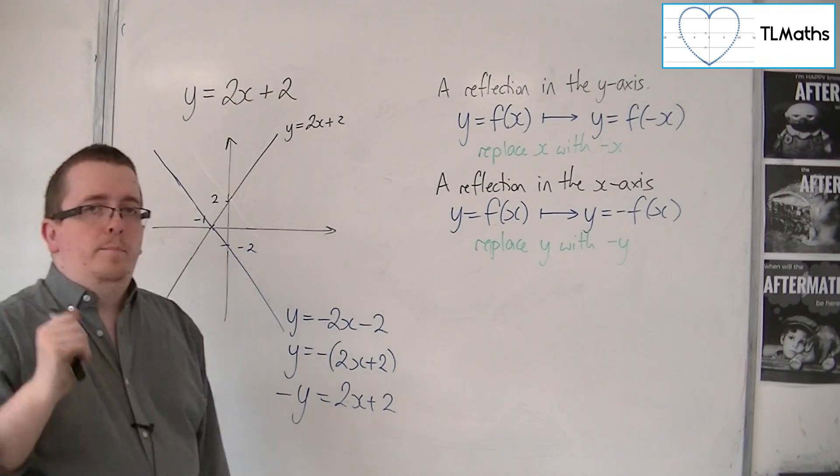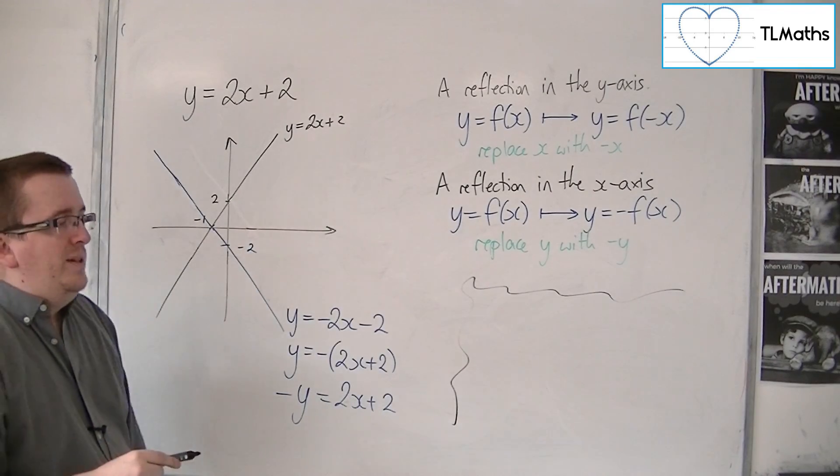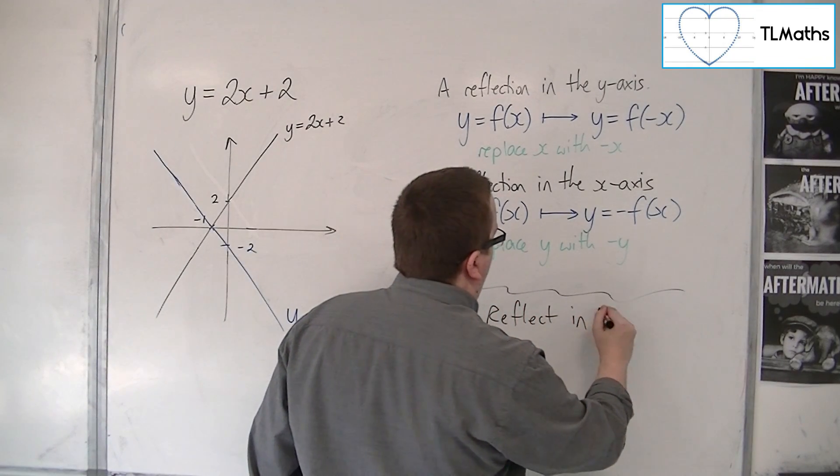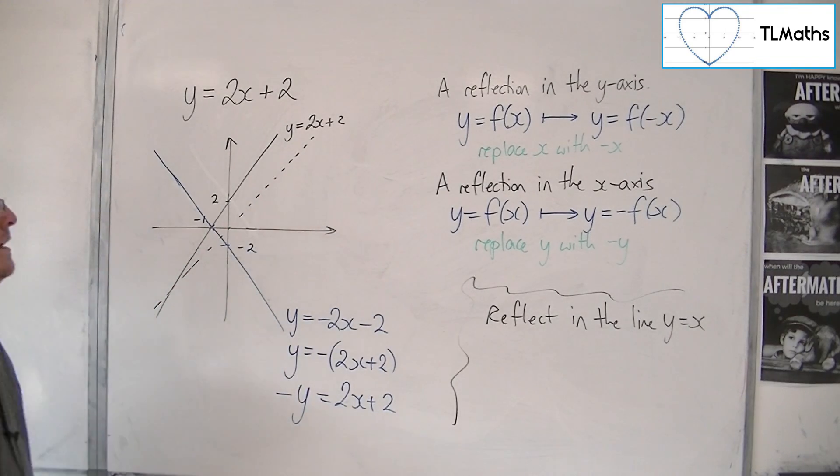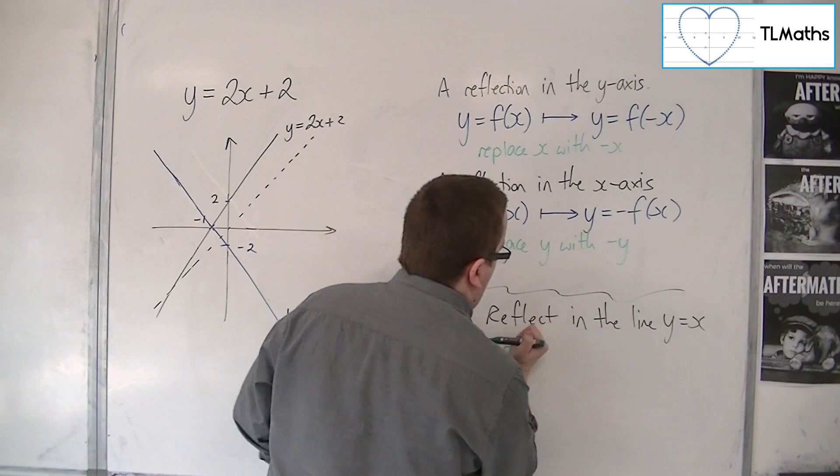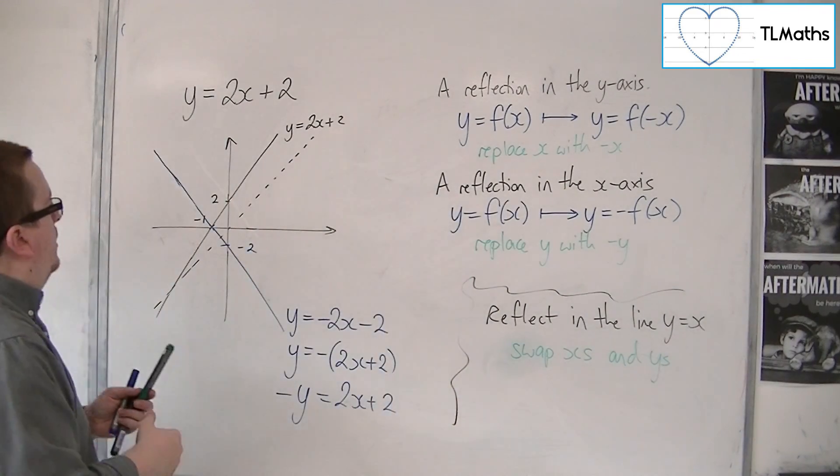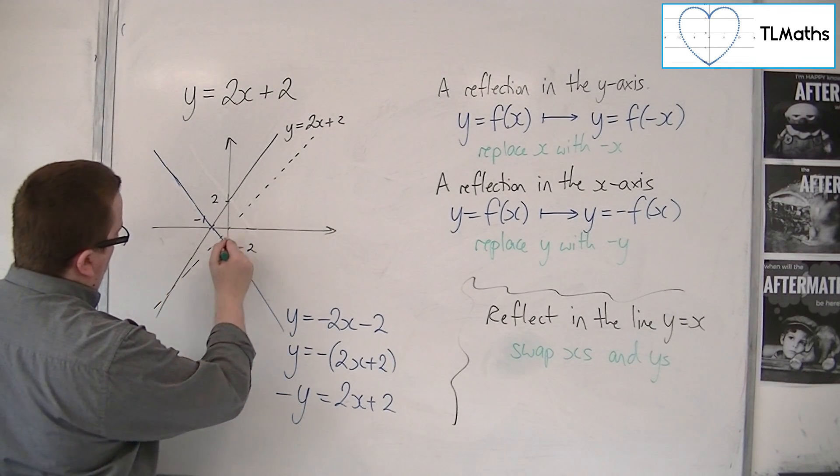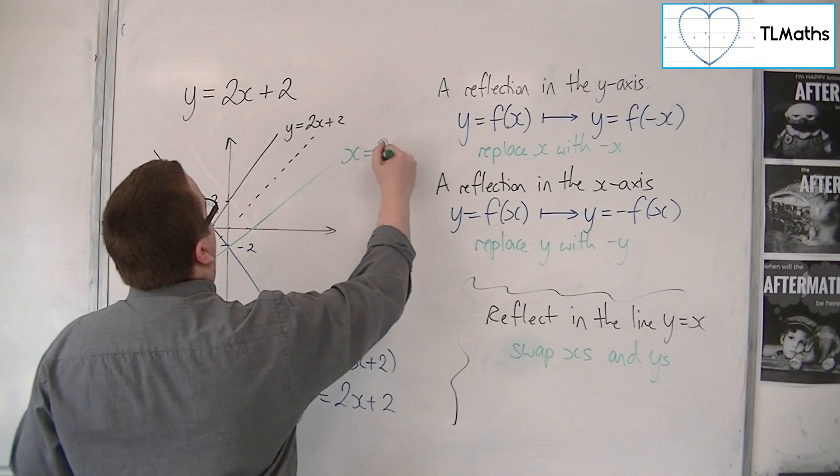Now, as an added bit to this, OK, one thing that is useful to know going into core 3, OK, so we don't really need it here, is you can also reflect in the line y equals x. So you can reflect in that line there, OK? And in order to do that, you replace, or rather swap, x's and y's. So if I were to reflect this line in the line y is equal to x, then my new line would look something like this. And this would be x equals 2y plus 2.